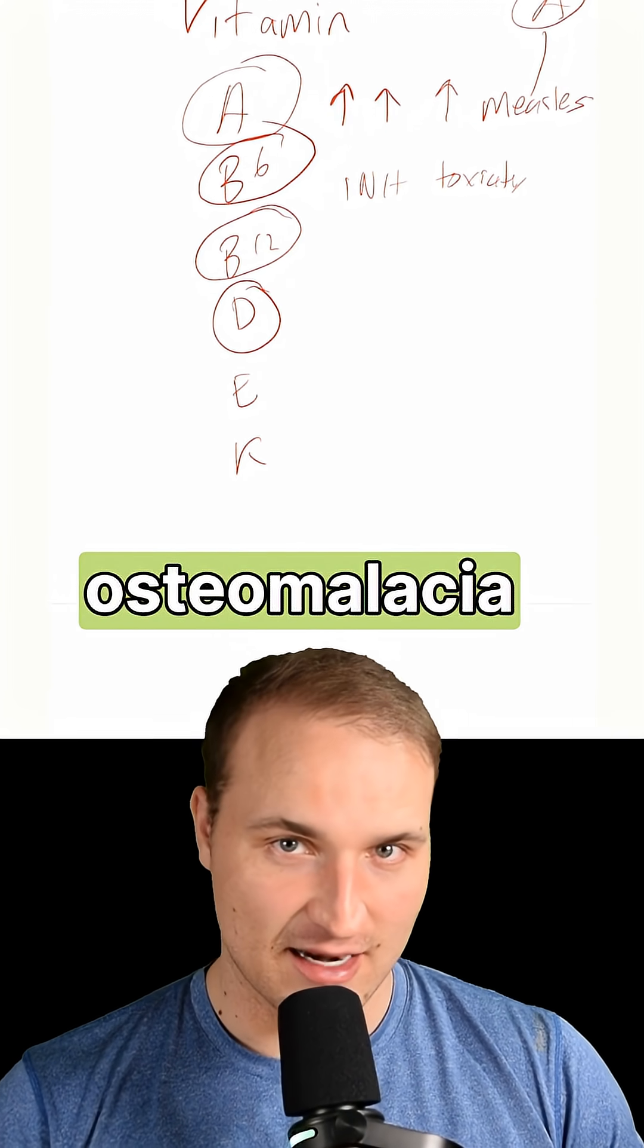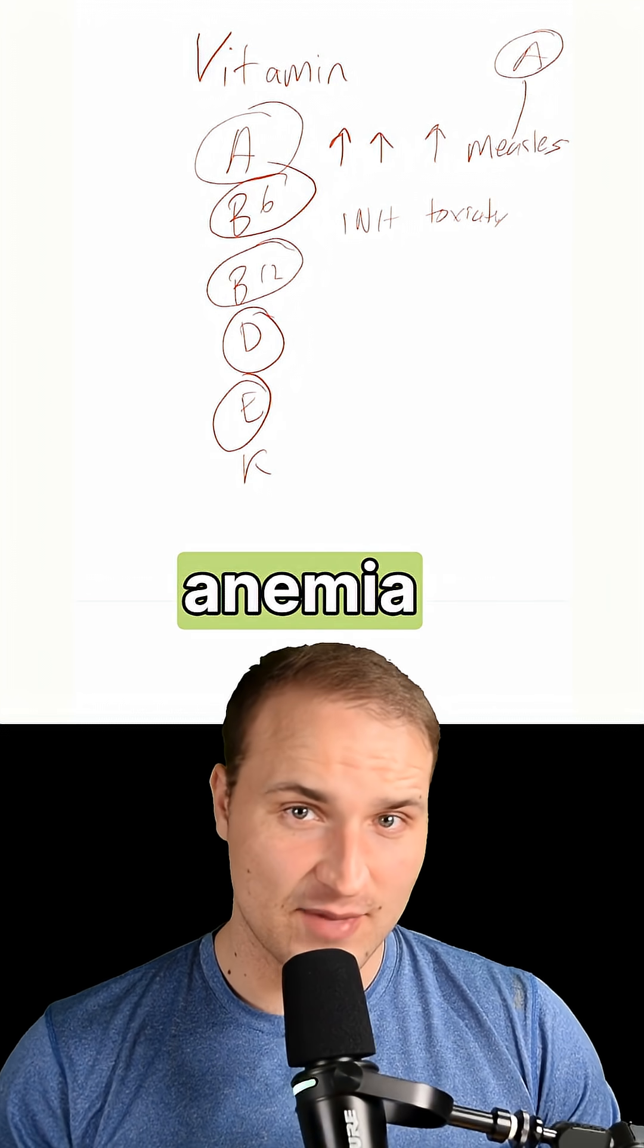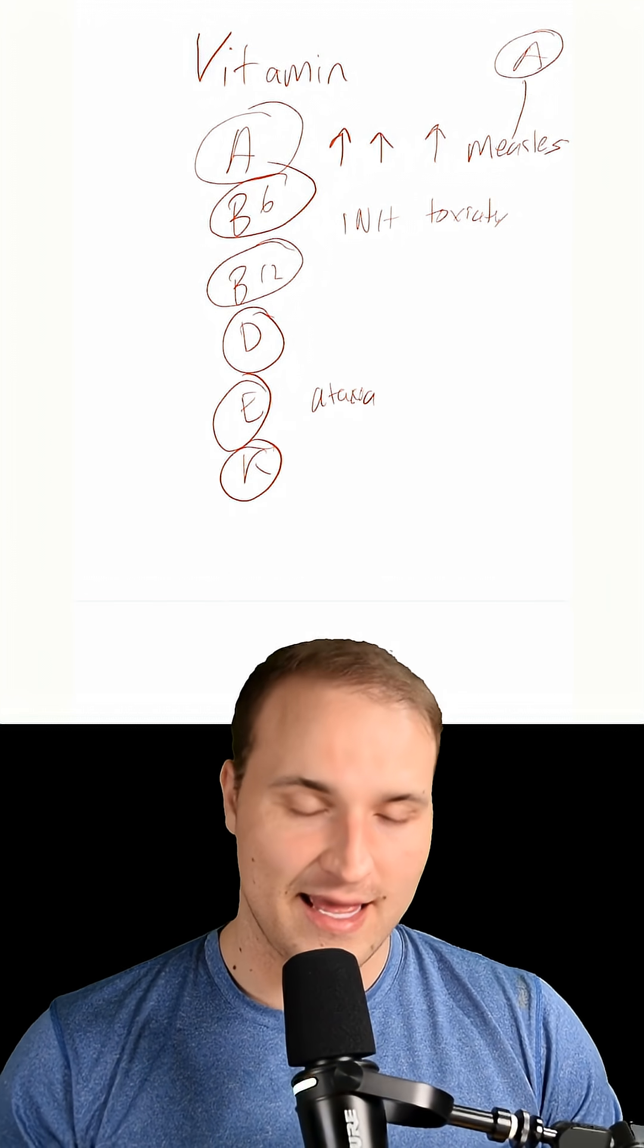D, think of rickets and osteomalacia in adults. E, think of hemolytic anemia and also ataxia. And K, you should think of bleeding.